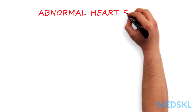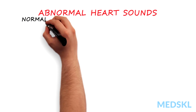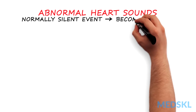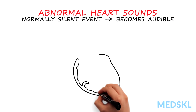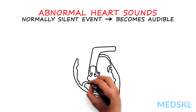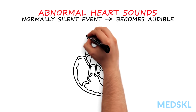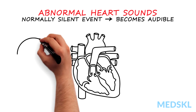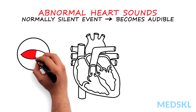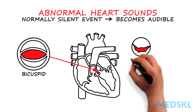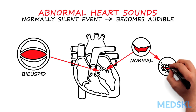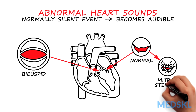Abnormal heart sounds can result from any of three general mechanisms. First, a normally silent event in the heart becomes audible. For example, opening of an abnormal valve may be heard as an ejection sound, as in bicuspid aortic valve, or an opening snap, as in mitral stenosis.